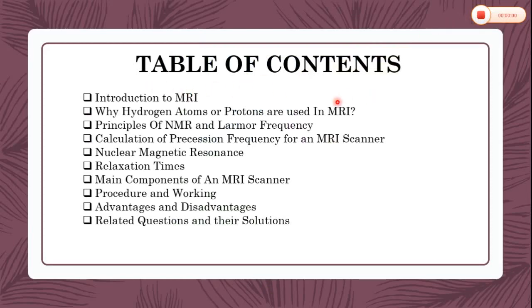Table of contents: introduction to MRI; why hydrogen atoms or protons are used in MRI; principles of nuclear magnetic resonance and Larmor frequency; calculation of precession frequency for an MRI scanner; nuclear magnetic resonance; relaxation times; main components of an MRI scanner; procedure and working; advantages and disadvantages; related questions and their solution. Today, we will focus on the first three points.